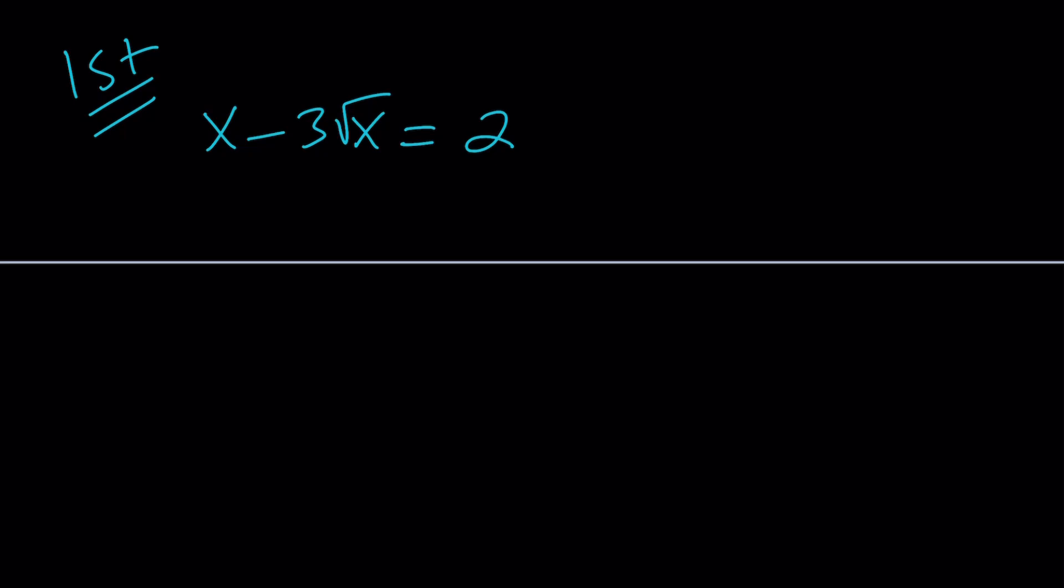There are a couple different ways to solve this equation. For example, you can isolate the radical, square both sides, and then check your work because you might get extraneous solutions. Or you can use substitution, which is a little safer, and set square root of x equal to something like t.